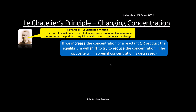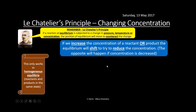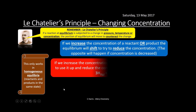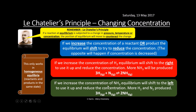Changing concentration: if we increase the concentration of a reactant or product, equilibrium will shift to try and reduce that concentration. This system only works in homogeneous equilibrium — all reactants and products in the same state. For example, if we increase the concentration of hydrogen, equilibrium shifts right to use it up, producing more ammonia.